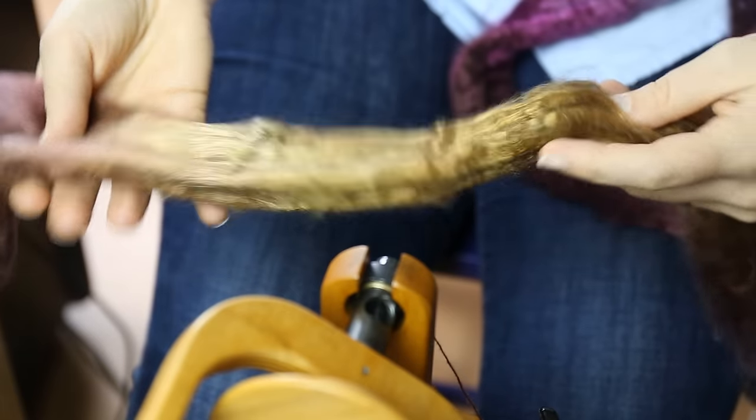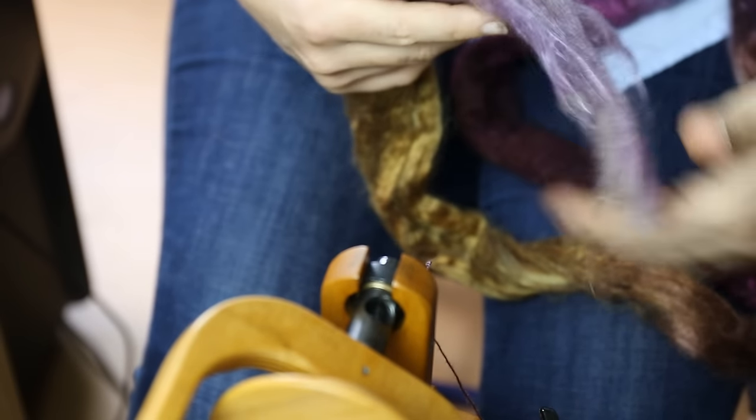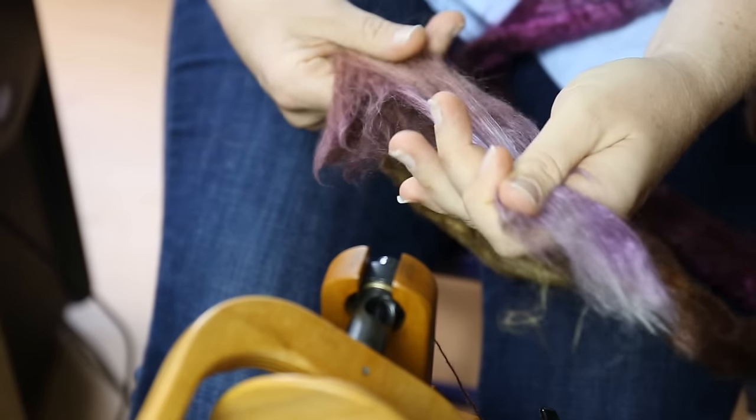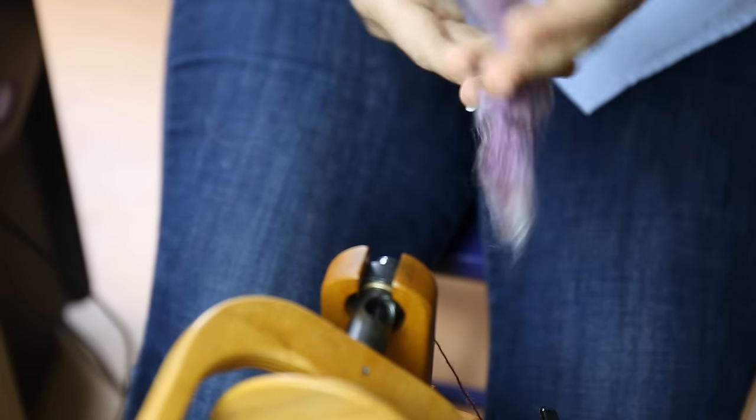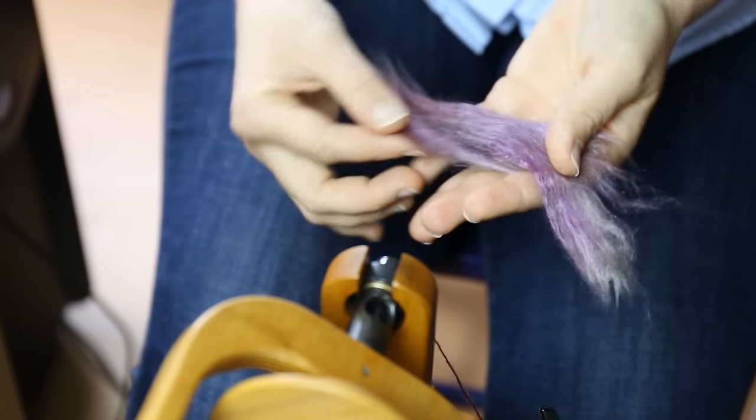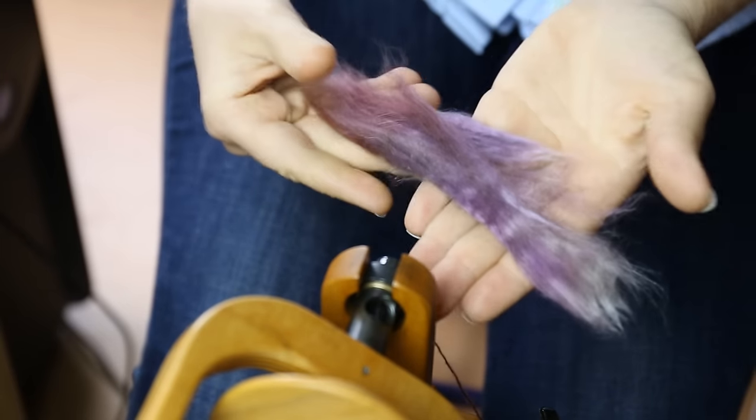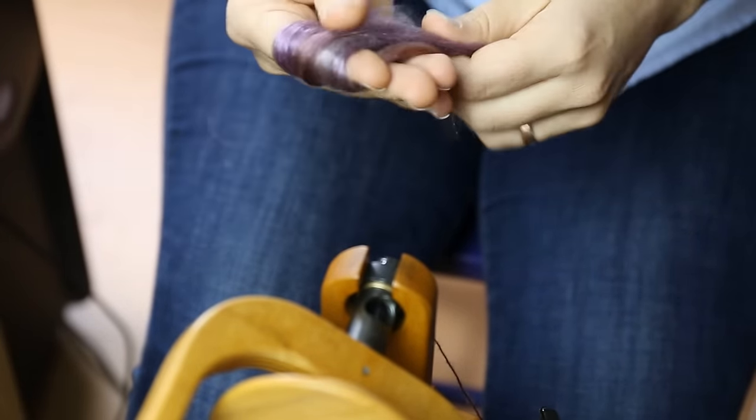What I do for spinning from the fold is I take my combed top, and this is some 50/50 merino silk that's part of Fiber Club this month from Sweet Georgie Yarns. I break off some. I don't worry about whether or not it's an actual staple length, as you can see there's another piece here. I just lay it all together and fold it over my finger.